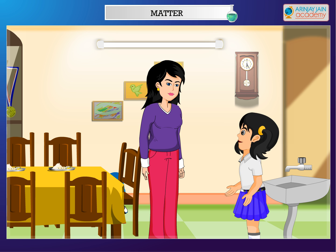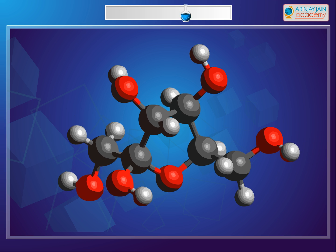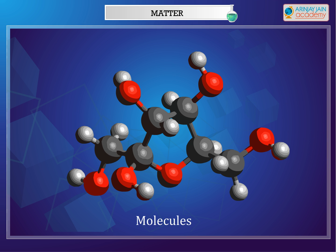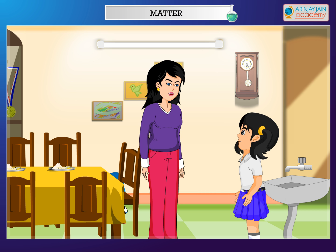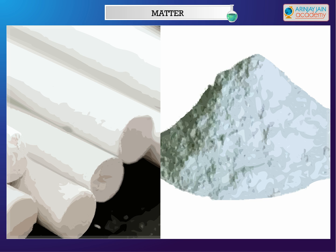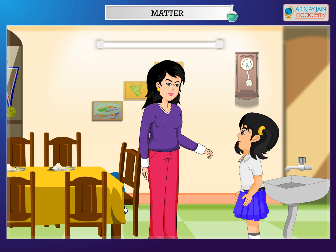What is matter made up of? Matter is made up of tiny invisible particles called molecules. For example, suppose we break a piece of chalk — it breaks into smaller pieces. If we keep on breaking these pieces, they become smaller and smaller till they become a powder. Scientists can break down the particles even further till they become so tiny that they are no longer visible. These tiny invisible particles are called molecules.